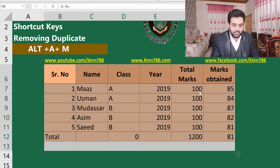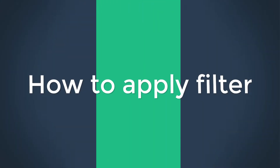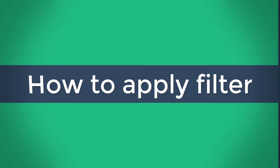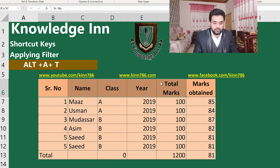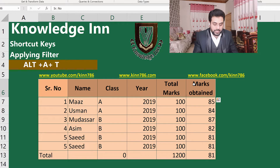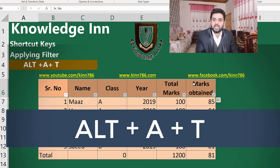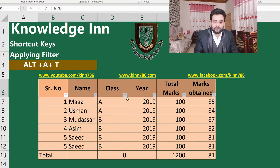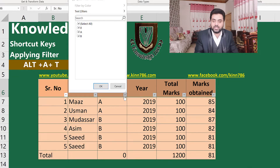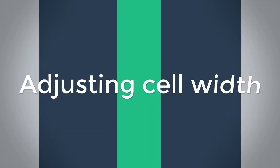Let's jump to the next shortcut key, which is to add a filter. Where you want to apply the filter, simply select that row and then press Alt+A+T. It will add the filter where you can see different results.